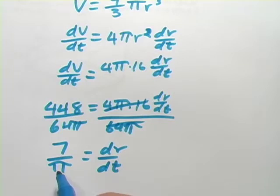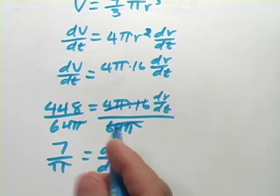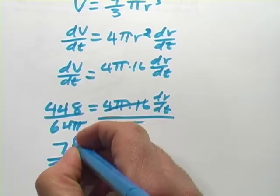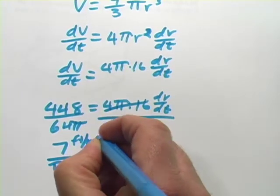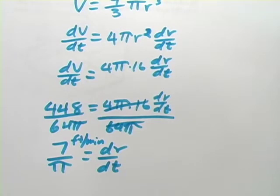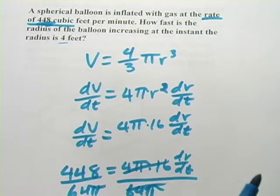And this would be, since it's the radius, it's not a volume. So this is just going to be feet per minute. Feet and minutes were our original units. All right, let's try one more typical type of related rates problem.